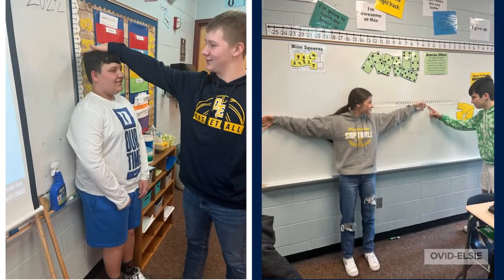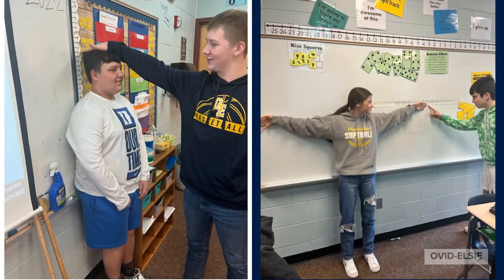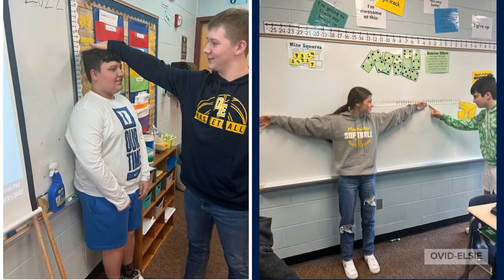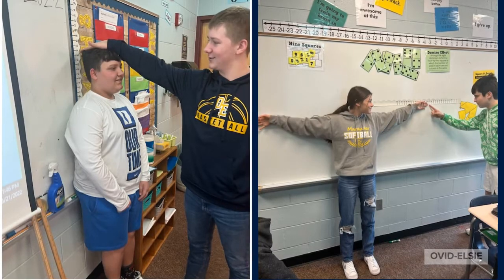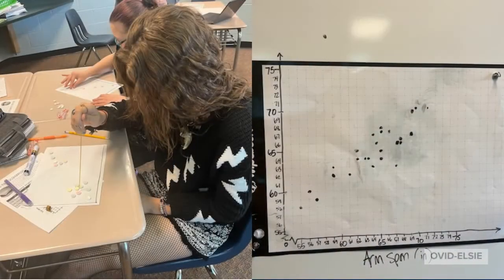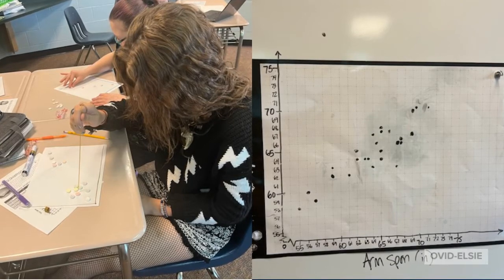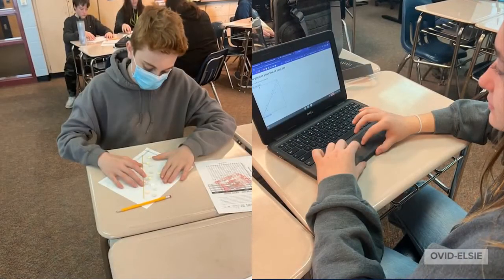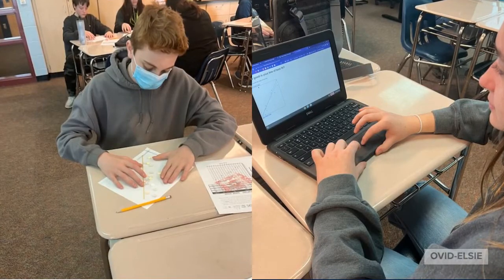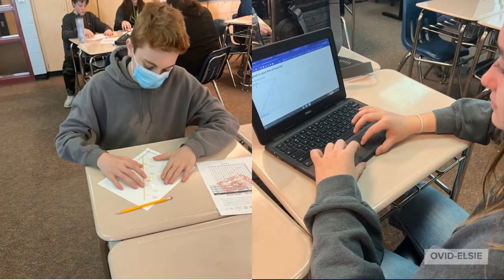Eighth graders started a unit on associations and data this week in math class. They began by collecting their own data on their heights and wingspans, then learned how to organize the data using a scatter plot. After practicing creating their own scatter plots, they spent time analyzing and interpreting the data to identify associations and make predictions.